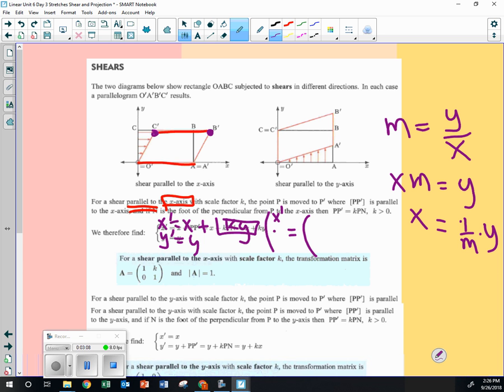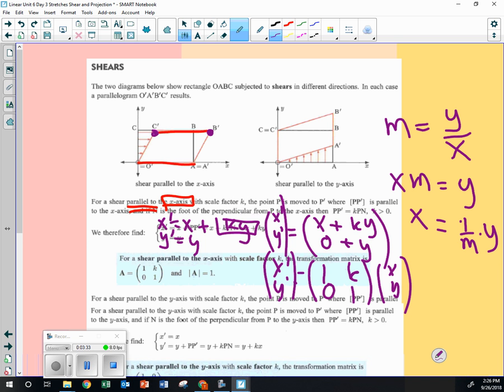x prime, x prime, y prime, you get x plus k, y, and you get 0 and y plus y. You can see how this turns into x prime, y prime, 1, k, 0, 1. x, y, 1, k, 0, 1. Yeah. And a determinant of 1.